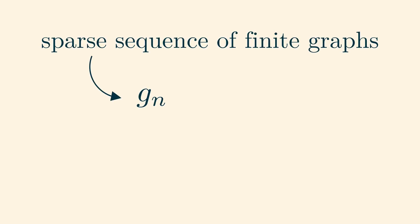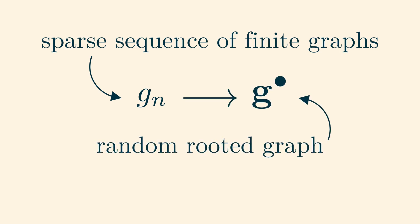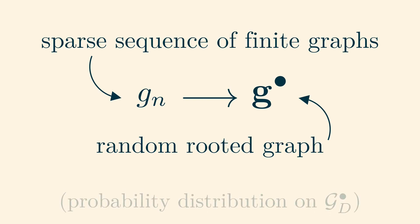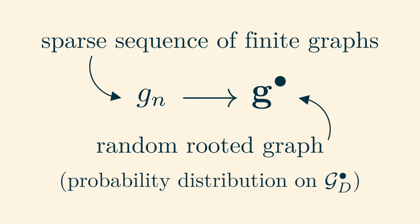In our last video, we presented a notion of graph convergence, where sparse sequences of graphs can converge to a graph limit. These limits are all random rooted graphs, which are the same thing as probability distributions on the space of rooted graphs.